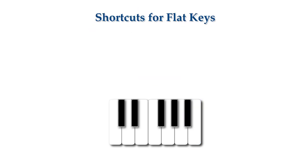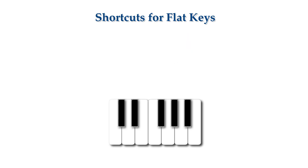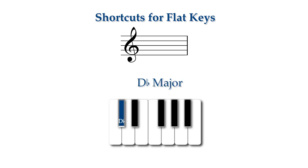I can find the tonic of a flat key signature by simply looking at the penultimate flat. When I am writing flat key signatures, I write out the flats in order until I get to the tonic, then I add one more flat. So to write the key signature for D flat major, I write B flat, E flat, A flat, D flat, then add one more: G flat.